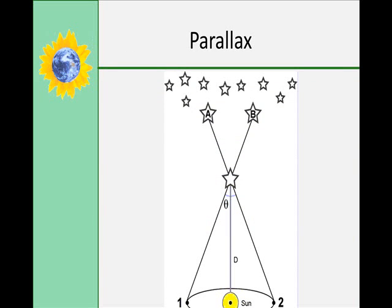Parallax is also a method that astronomers use to measure the distance to nearby stars. Parallax is the apparent change in position of an object when you look at it from different places. An easy way to see parallax in your own daily life is to hold up your finger and line it up with the corner of a room. Close your left eye and look at it, then close your right eye and look at it. Whichever one shifts the farthest away from the corner also tells you which is your dominant eye, and it shows you what parallax would be, because you see a shift in the way your finger looks against that corner line.